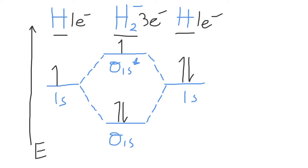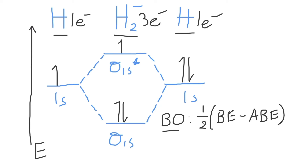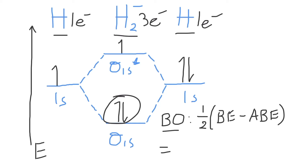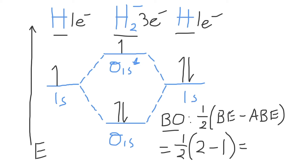What is the bond order for the H2 minus molecule? Bond order measures the strength of a bond and is directly related to its stability. The formula is: one-half times (number of bonding electrons minus number of antibonding electrons). For H2 minus, we have two bonding electrons and one antibonding electron, so bond order = one-half × (2 − 1) = one-half.